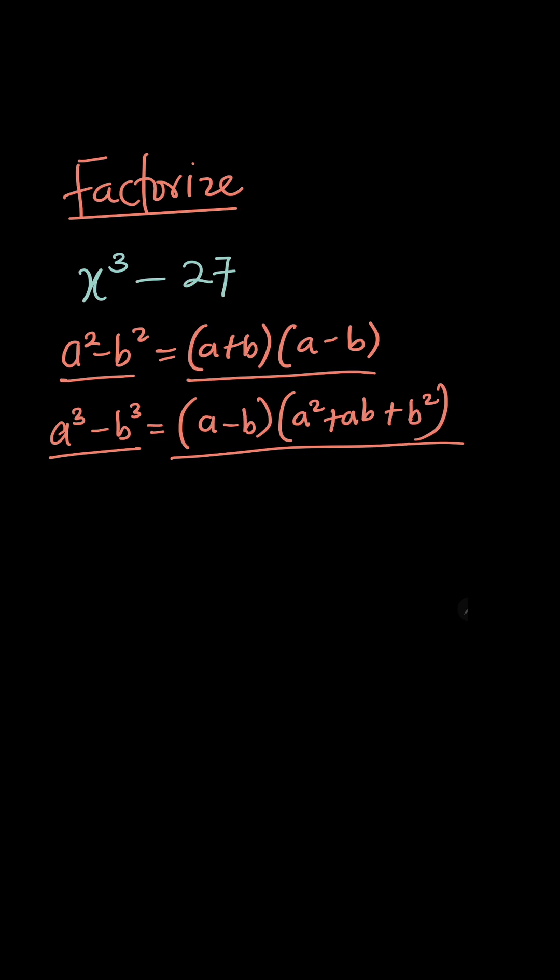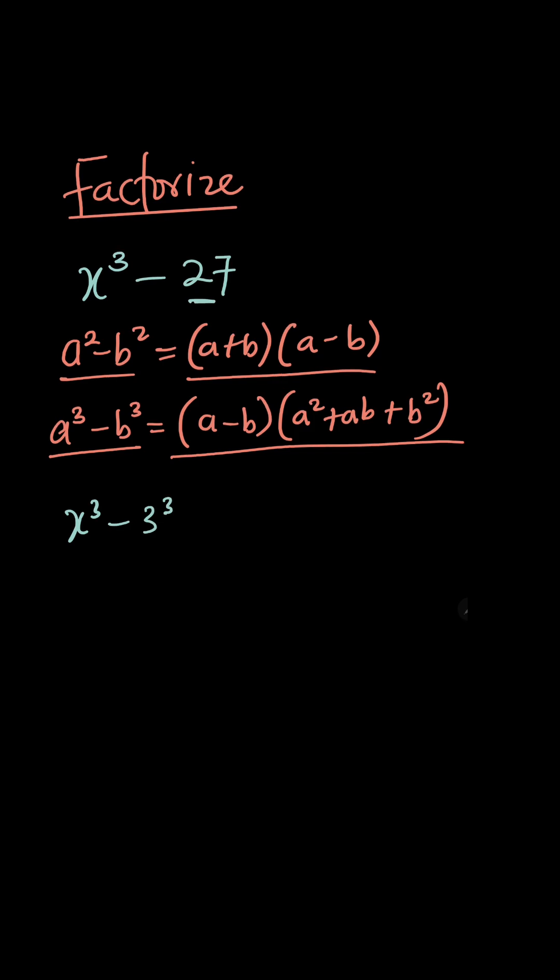So now we can write the question as x cubed minus 27, which becomes 3 cubed. So 3 cubed. So now we can apply this to express this one. So by comparison, you can see that a is what? x, and b is what? 3.